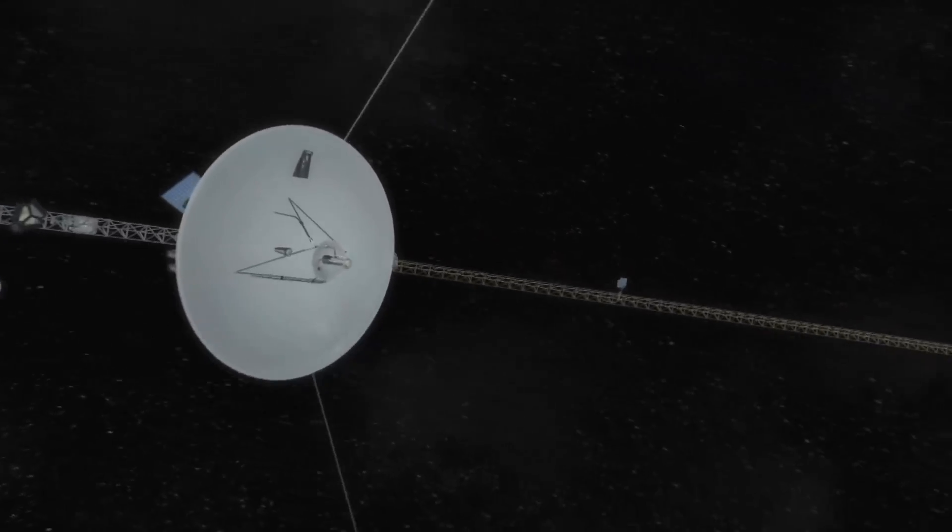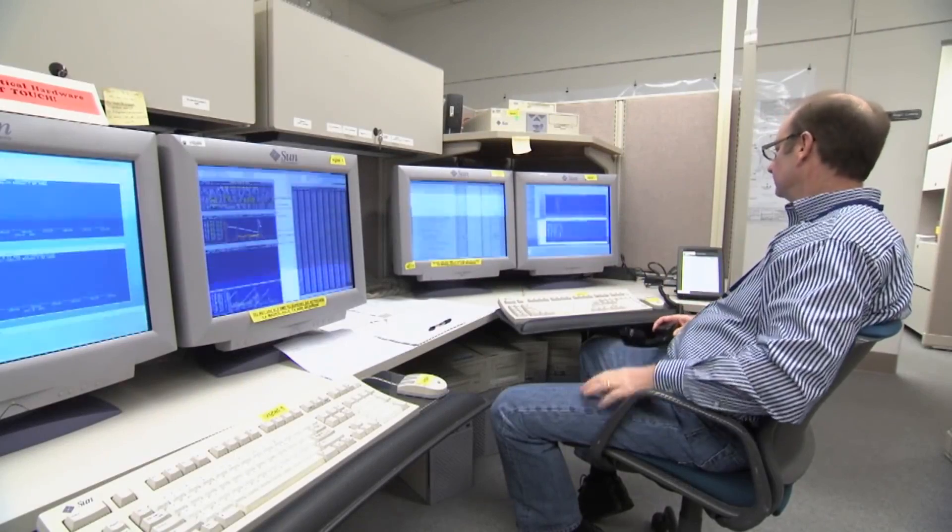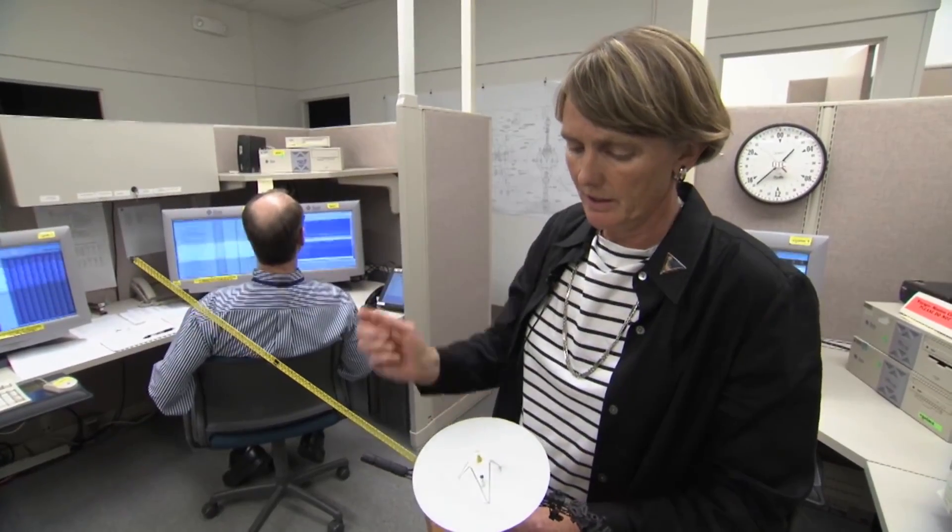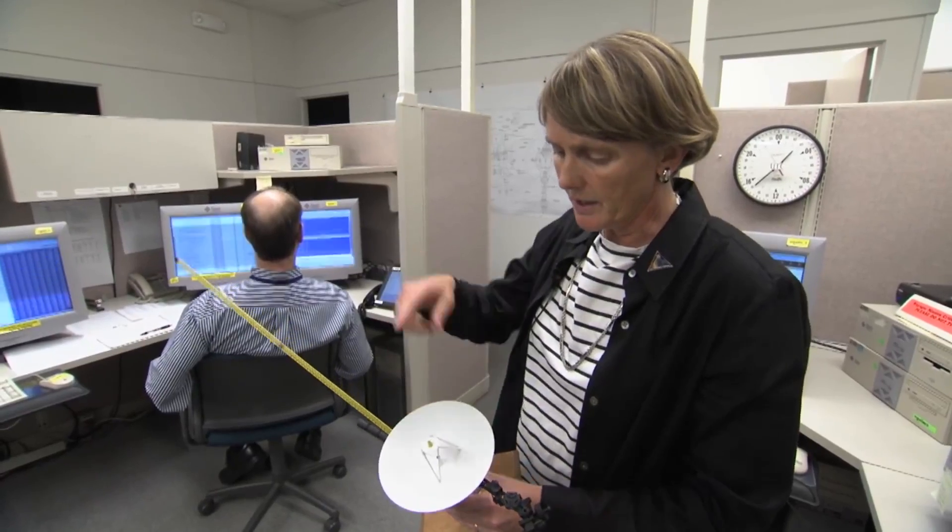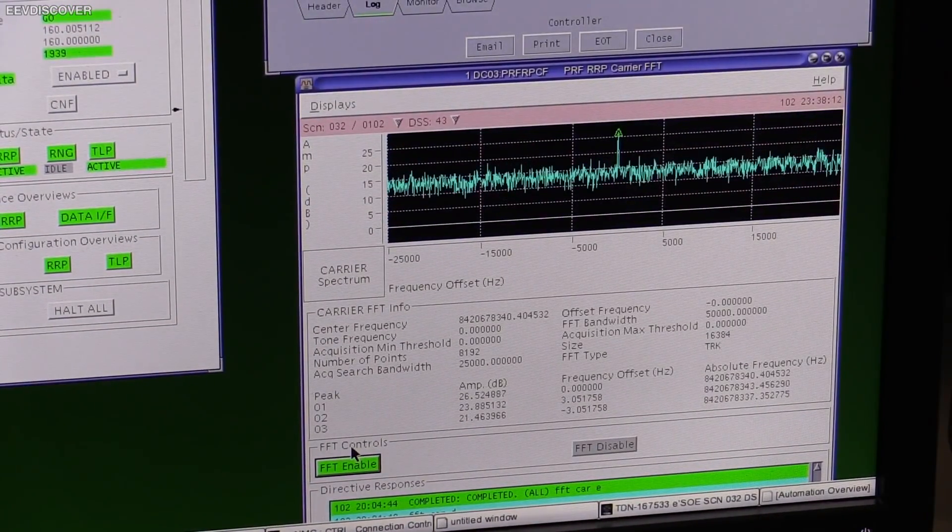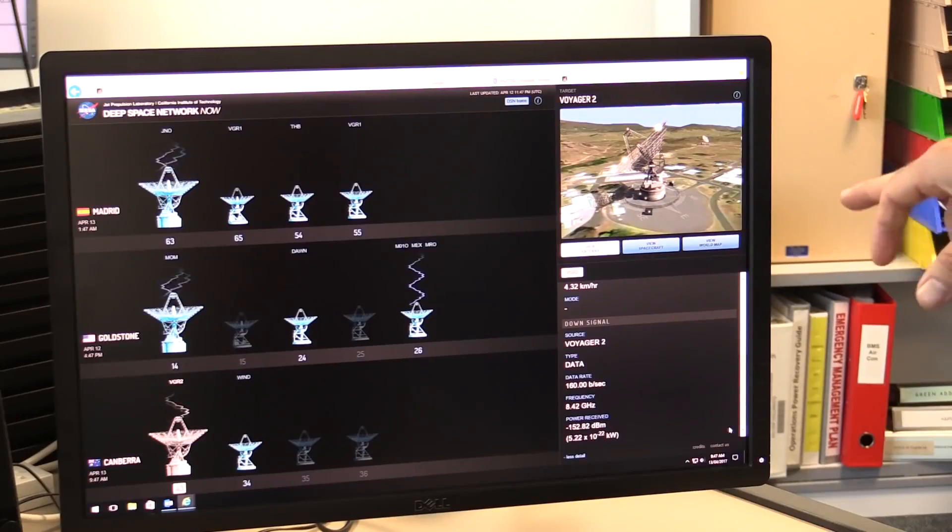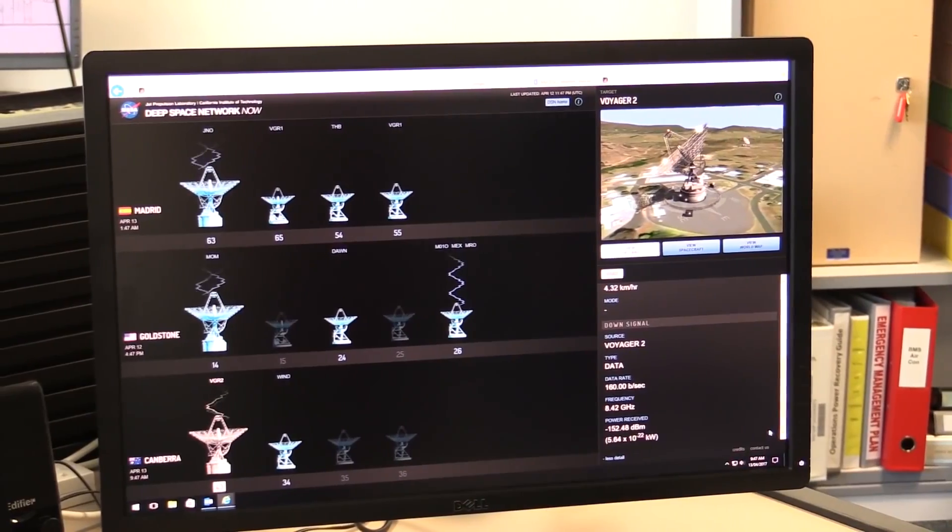After getting useless data for months with no obvious way to fix the probe, Voyager 1 began sending back normal telemetry data after one last attempt to fix it. NASA found that the spacecraft was sending data through a faulty onboard computer that had failed years before. This computer then distorted the data being sent, resulting in the team having to deal with months of junk telemetry data. However, once mission control realized that the probe was using a malfunctioning computer, all they had to do was transmit a command to the spacecraft to switch the dead computer with the right one for data transfer back to Earth.